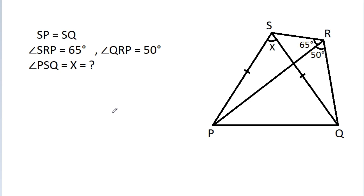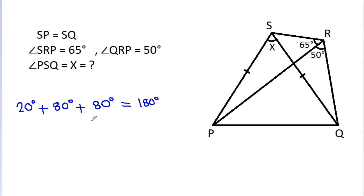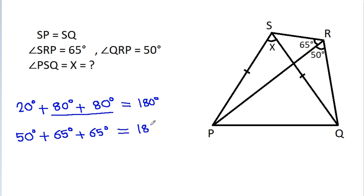Keep in mind that 20 degrees, 80 degrees, 80 degrees are very common angles because they add up to 180 degrees and two angles are equal. Also, 50 degrees, 65 degrees, 65 degrees add up to 180 degrees and two angles are equal. These are very common angle combinations.